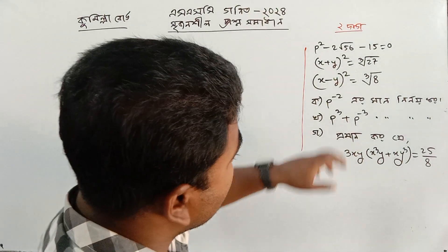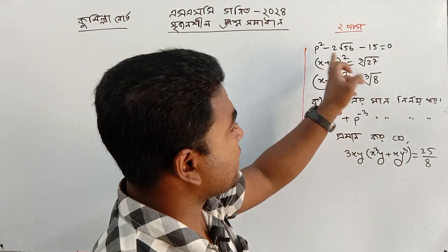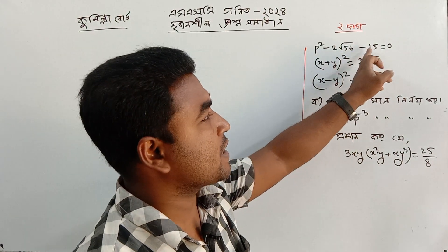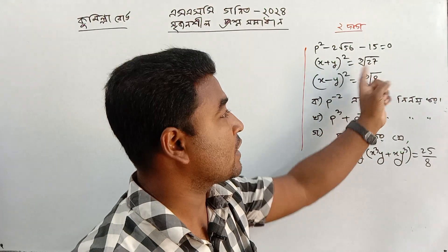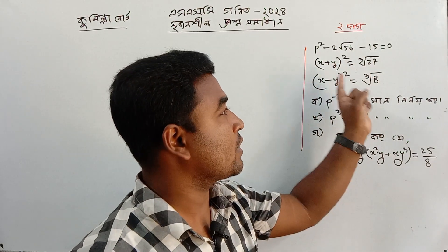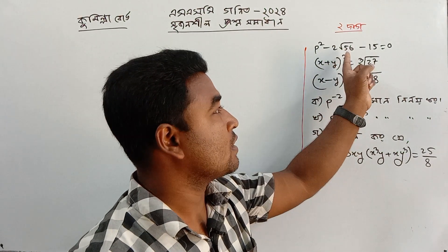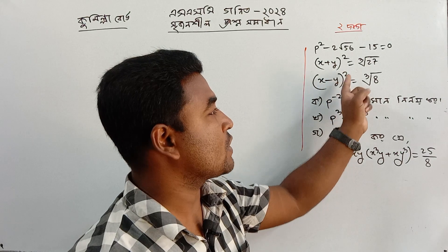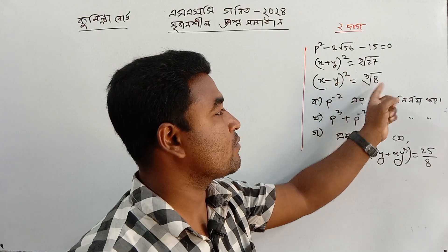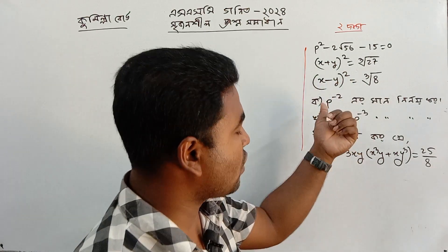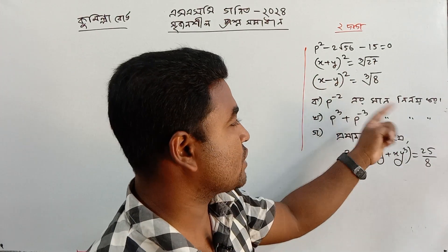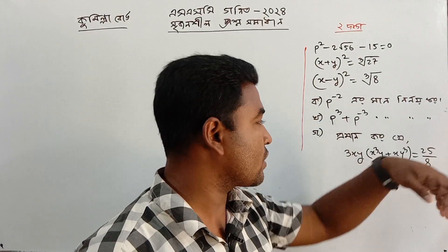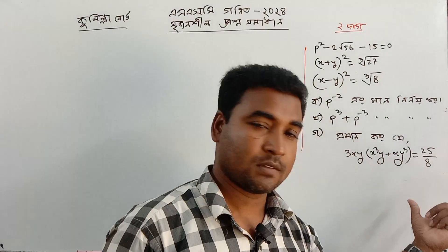We will need b minus 2 rule over 56 and sigma 1. x plus y over cube root 27, x minus y over cube root 8. It is that p minus 3 is negative, or greater than zero.